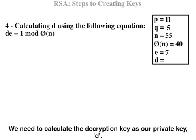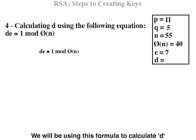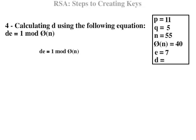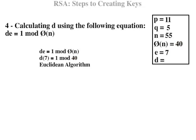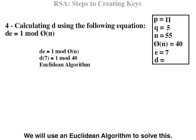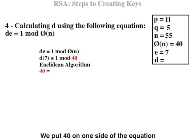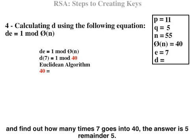We need to calculate the decryption key as our private key D. We will be using this formula to calculate D. This means D times 7 equals 1 modular 40. We will use the Euclidean algorithm to solve this. We put 40 on one side of the equation and find out how many times 7 goes into 40. The answer is 5 remainder 5.